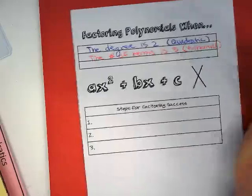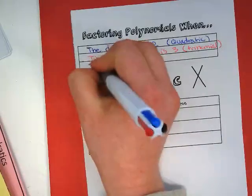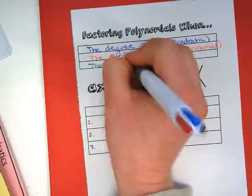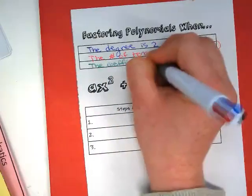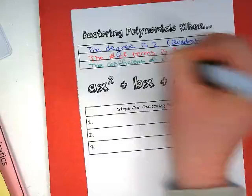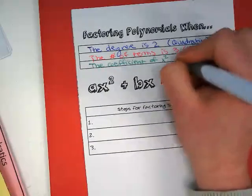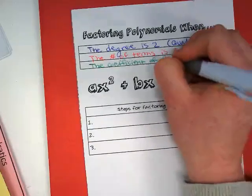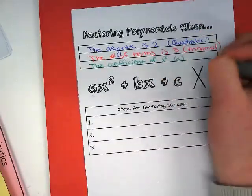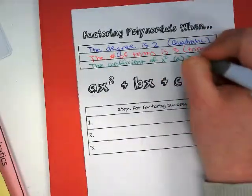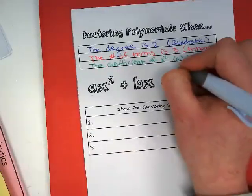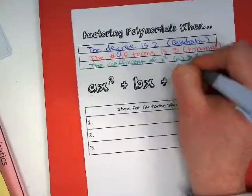And when our leading coefficient, the coefficient of x squared, in this polynomial, we label that as a. It is greater than 1. You will also see this as when a is not equal to 1.